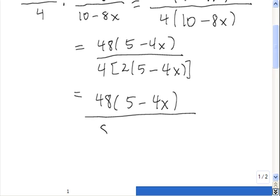So 4 times 2 gives us 8, and then we still have the (5 - 4x). Now both the top and the bottom are factored completely, so we're ready to do canceling.